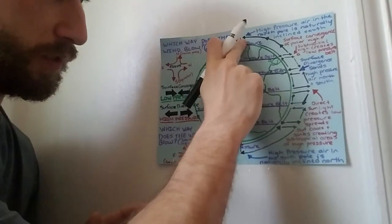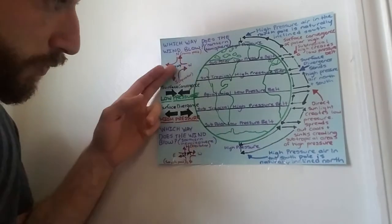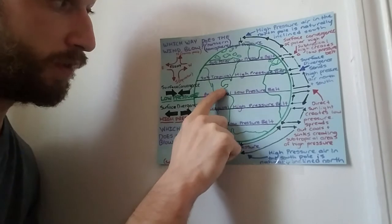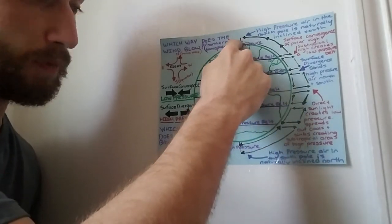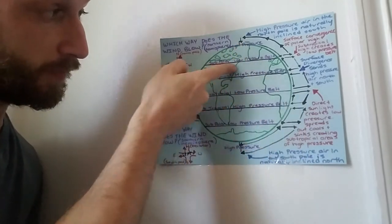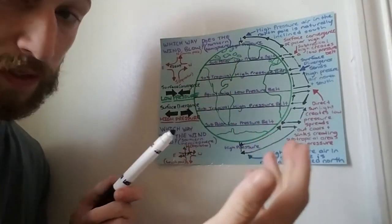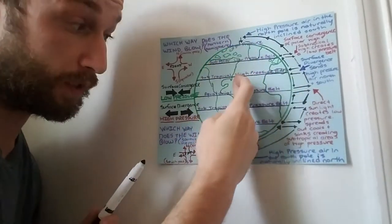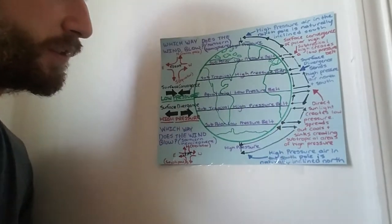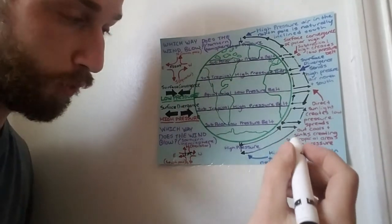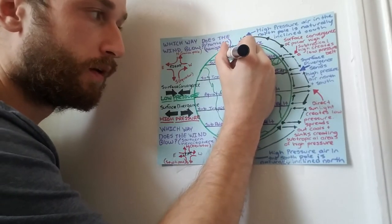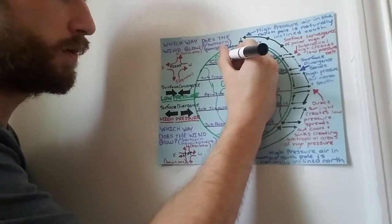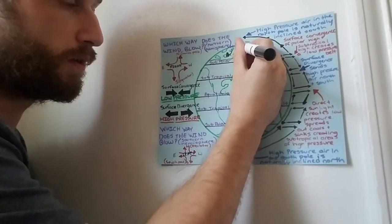The direction of the wind is determined by the Coriolis effect. In the northern hemisphere, winds always bend to the right. If you're coming down from the north pole it goes right, but whether it goes east or west depends on whether it's traveling from the equator to the north pole or from the north pole to the equator, and vice versa in the southern hemisphere. Starting with the polar easterlies — coming from the north pole, these bend to the right.